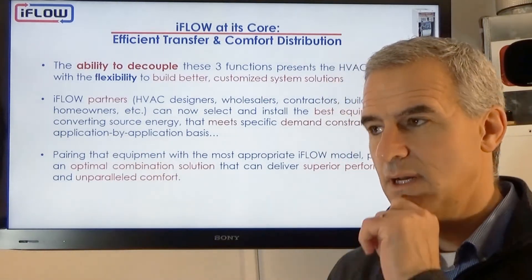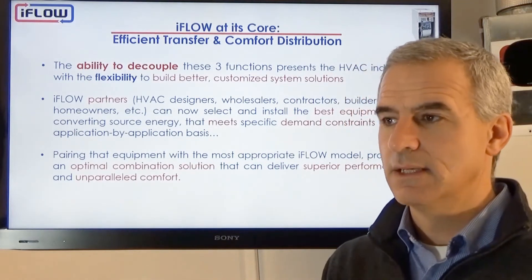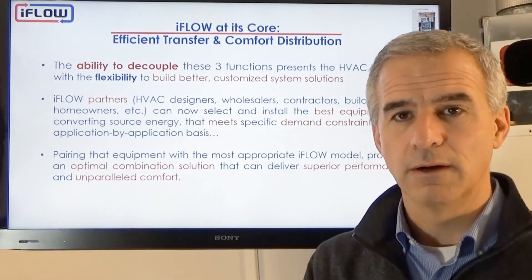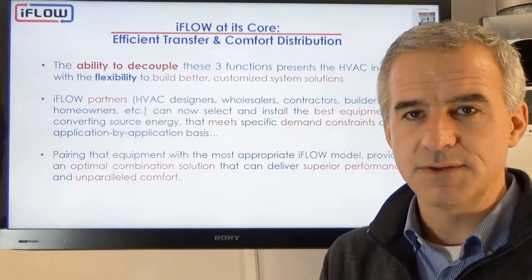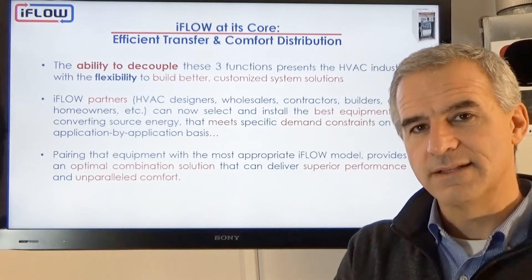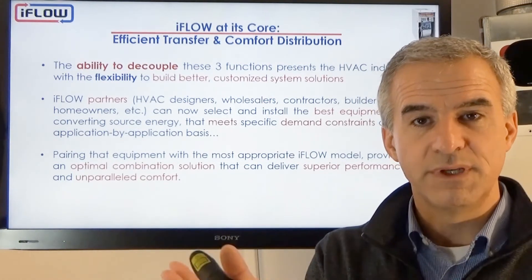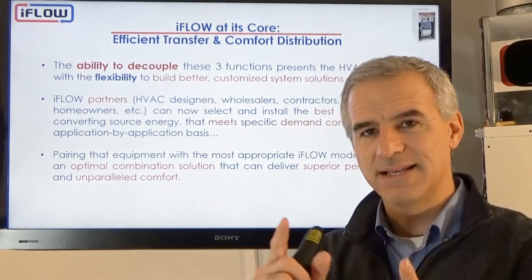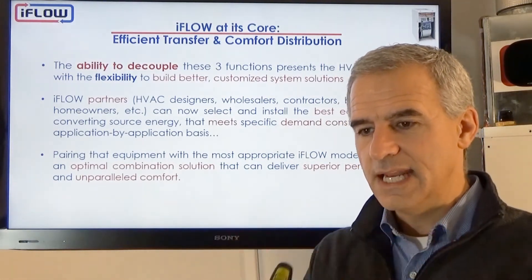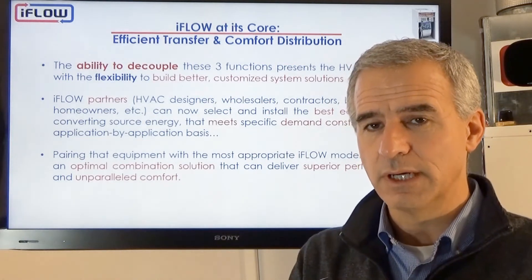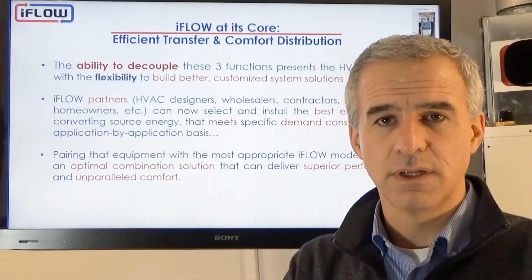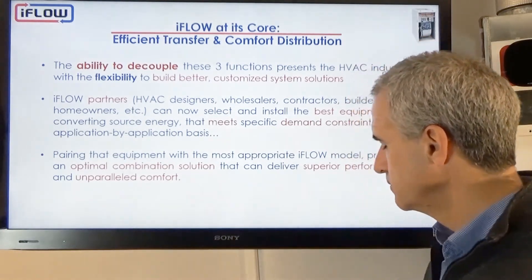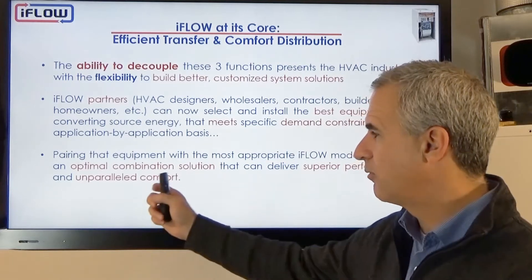Pairing that with iFlow gives an optimal combination solution. We pick the best heat source for function one and pair it with iFlow. For example, if a zone needs 7,000 to 8,000 BTUs, we choose a boiler with a minimum input of 7,000 BTUs so it won't be cycling when that zone calls — it can deliver at maximum but also at minimum. It's about sizing the heating appliance to match not only the maximum heat load but the minimum heat load of the smallest zone, so we're not cycling the unit and allowing it to work at maximum efficiency — delivering superior performance and unparalleled comfort.